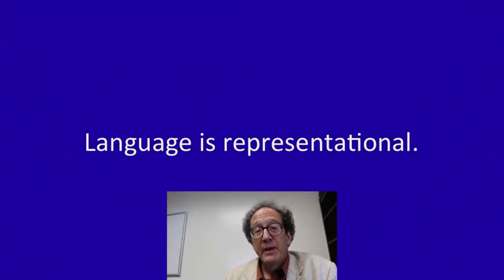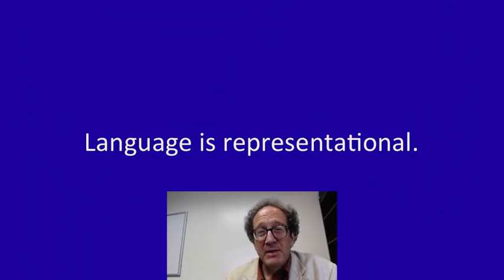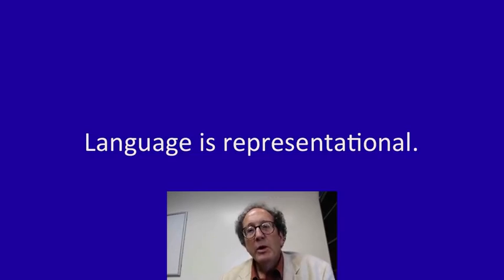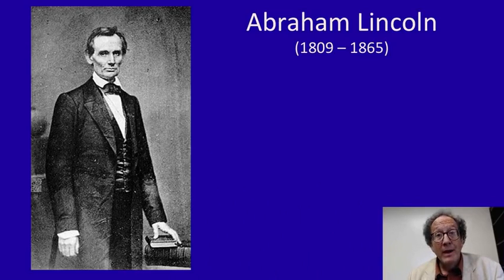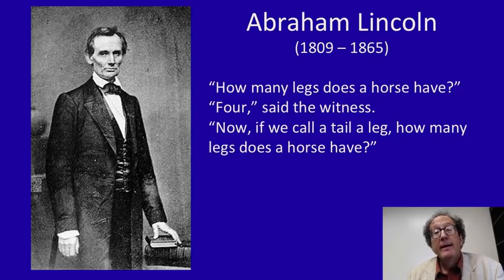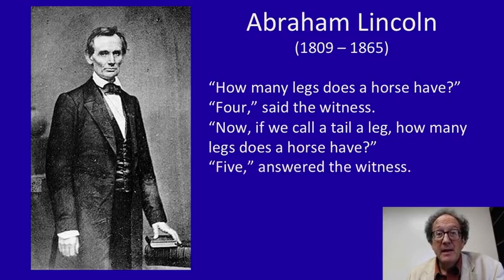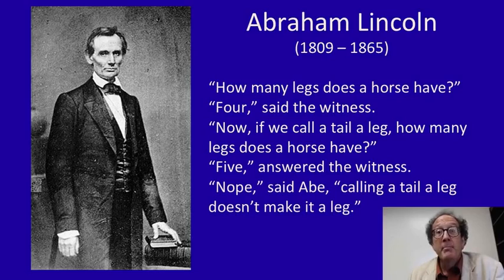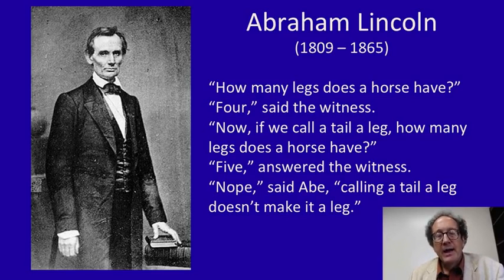First, language is representational. When we use language, we're often trying to refer to objects in the world and describe facts in the world — and you can't change those objects or those facts merely by changing your language. One good story to illustrate this is about the young Lincoln. When he was a lawyer, he supposedly examined a witness during a trial and said, 'How many legs does a horse have?' The witness said, 'Four.' Then Lincoln said, 'Well, if we call a tail a leg, then how many legs does a horse have?' The witness said, 'Then I suppose the horse would have five legs.' And Lincoln said, 'Absolutely not — that's wrong. Calling a tail a leg doesn't make it a leg.' The point of this story, whether historically true or not, is that language cannot change the facts of the world — it can't make horses have five legs if you merely change your language.